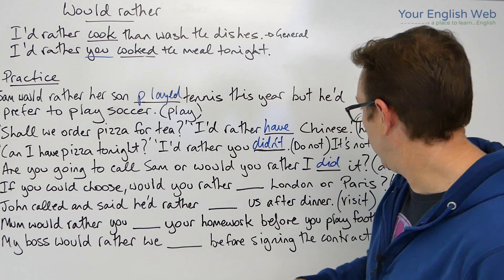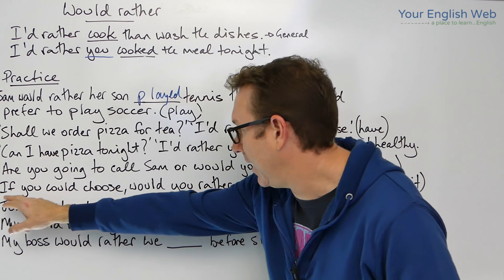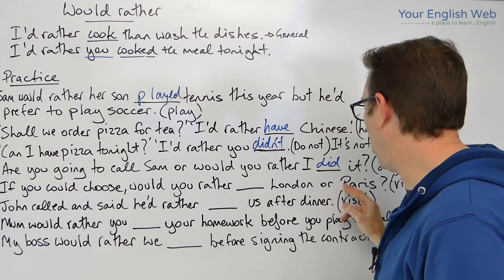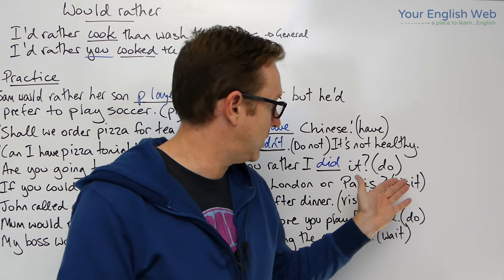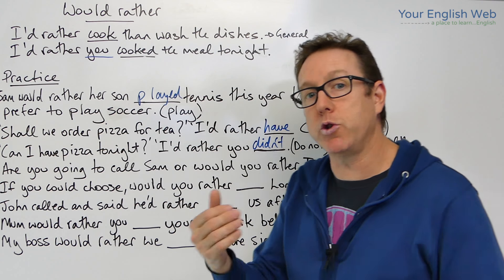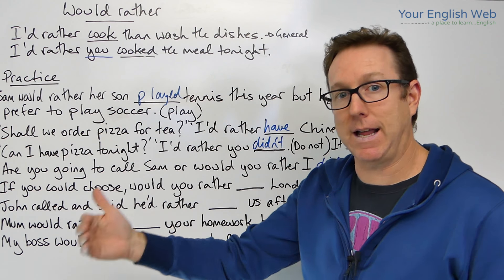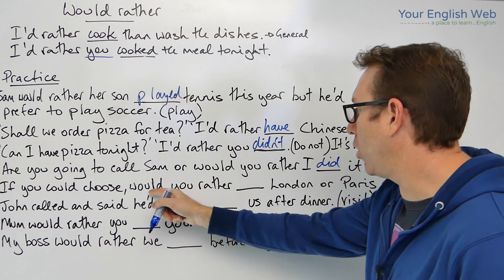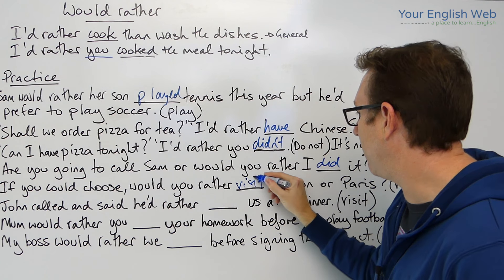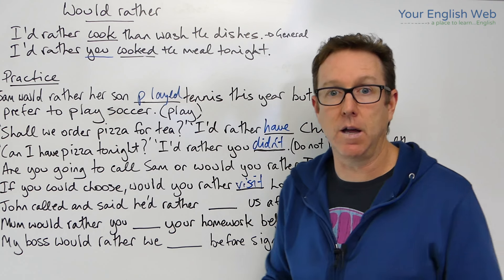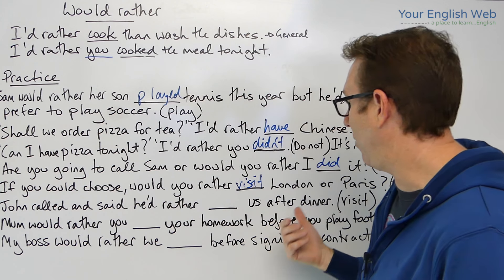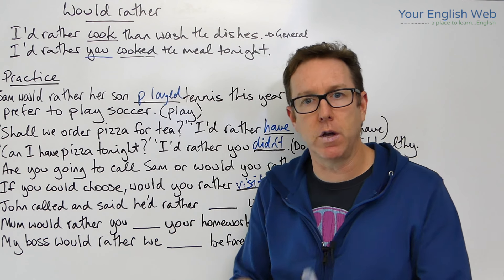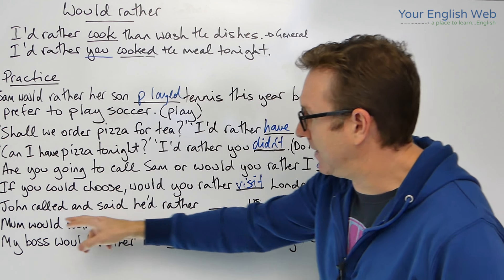'If you could choose, would you rather [visit] London or Paris?' The verb is 'visit.' Is anybody else involved in this sentence? No, there isn't. So the answer is: 'Would you rather visit London or Paris?' No one else is involved, so we use the infinitive.